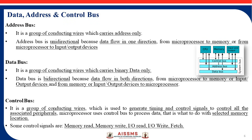Before moving forward to memory organization, let's first understand address bus, data bus, and control bus. The address bus carries addresses — it is a group of conducting wires that carry addresses only, for example 1010H. When you want to fetch data, the address bus carries the address of that particular data. The address bus is unidirectional, meaning data flows only one way: from processor to memory or processor to input/output devices.